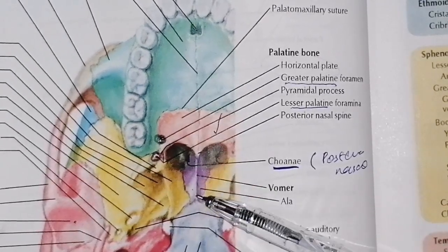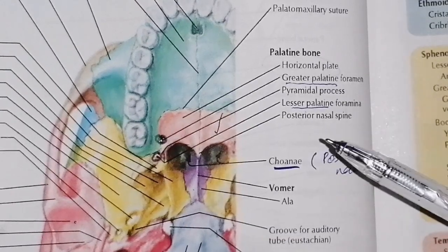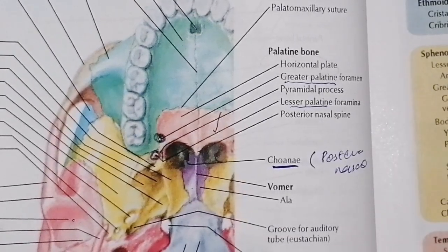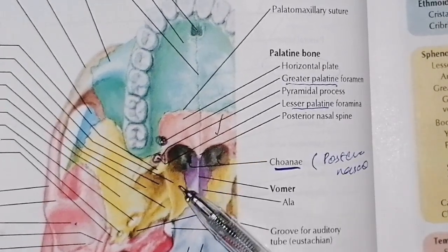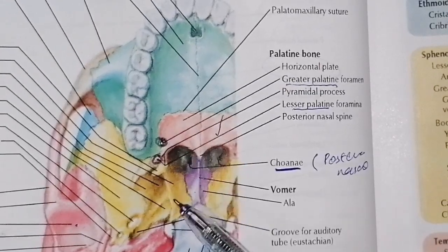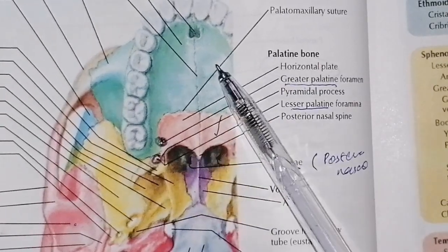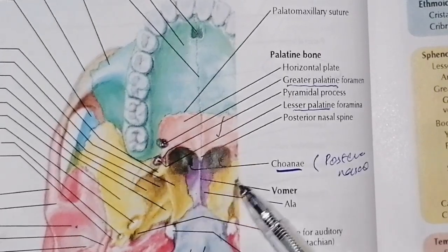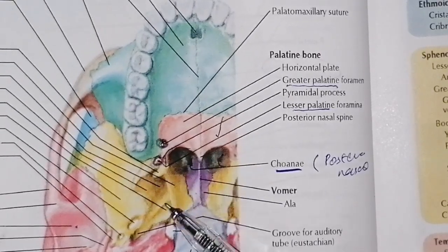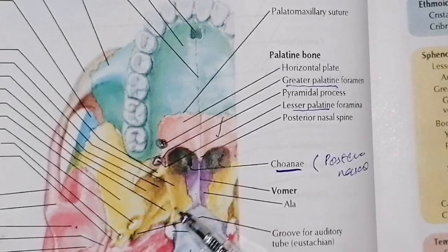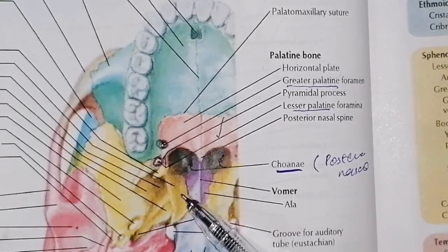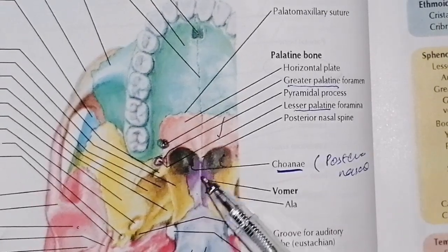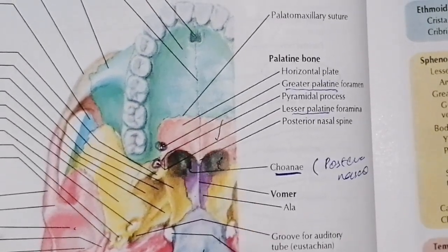The vomer bone is located in the middle of the nasal cavity. If we look at the inferior part, we look at the vomer plate. The vomer plate is made up of the sphenoid bone. This is the maxilla, the palatine, the vomer, and the sphenoid bone.